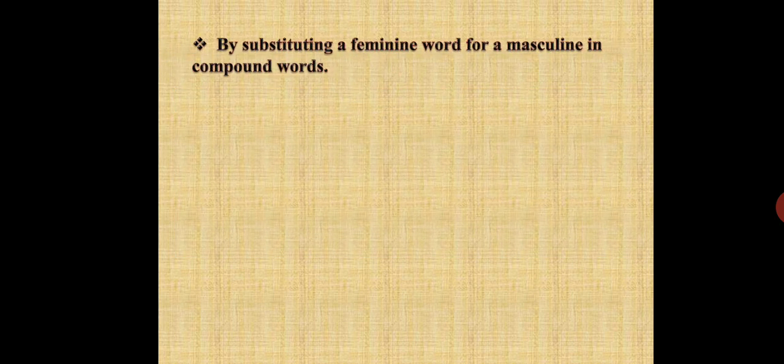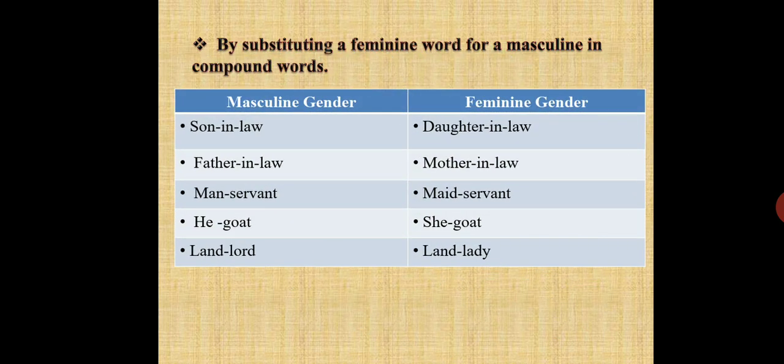Third rule: by substituting a feminine word for a masculine in compound words. Masculine gender — son-in-law, feminine gender — daughter-in-law. Similarly, father-in-law — mother-in-law, manservant — maidservant, he-goat — she-goat, landlord — landlady.